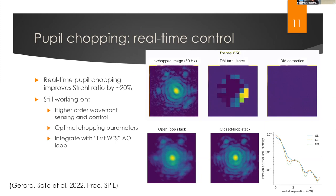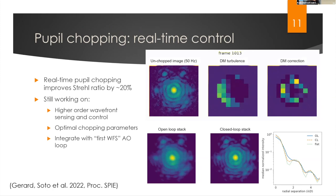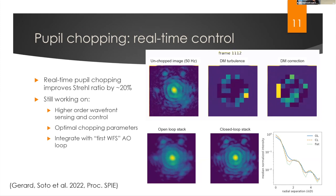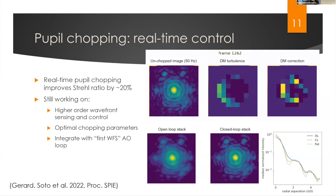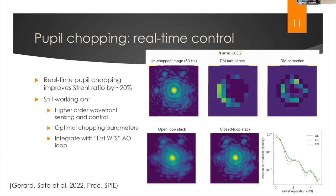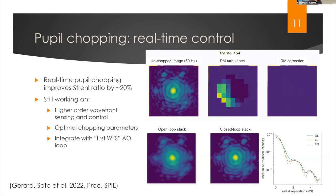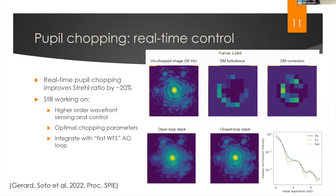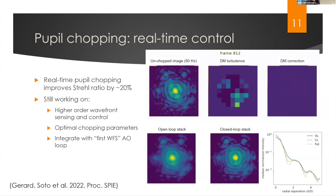Here's a real-time demonstration. This is the unchopped image showing the point spread function. We're playing turbulence on the deformable mirror and then applying correction. The stack of images without correction and with correction show a dimmer halo as we close the loop. The radial profiles for all cases show we're improving the Strehl ratio by about 20% — a simple demonstration, still with a lot to work on. This is with a low-order deformable mirror, so we'll look at higher-order control, optimizing parameters like how much to tilt the local part of the deformable mirror and how much of the pupil is doing the tilting, then integrating with first-stage wavefront sensors like the Shack-Hartmann.